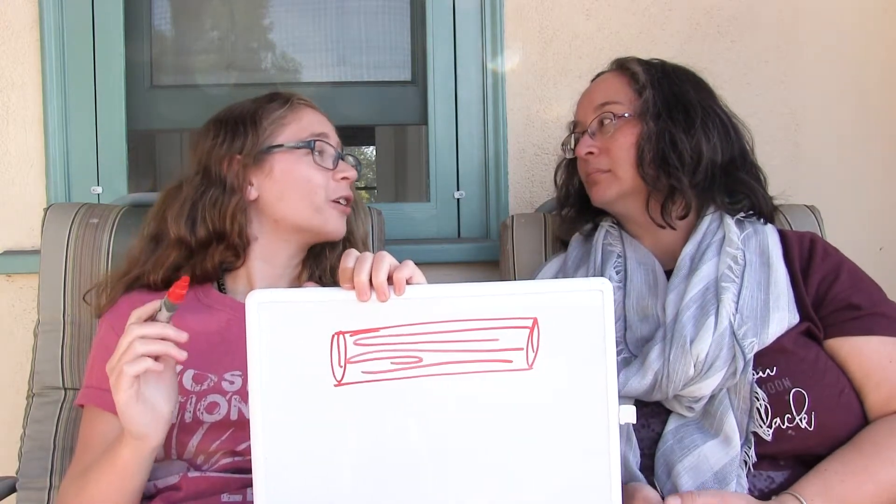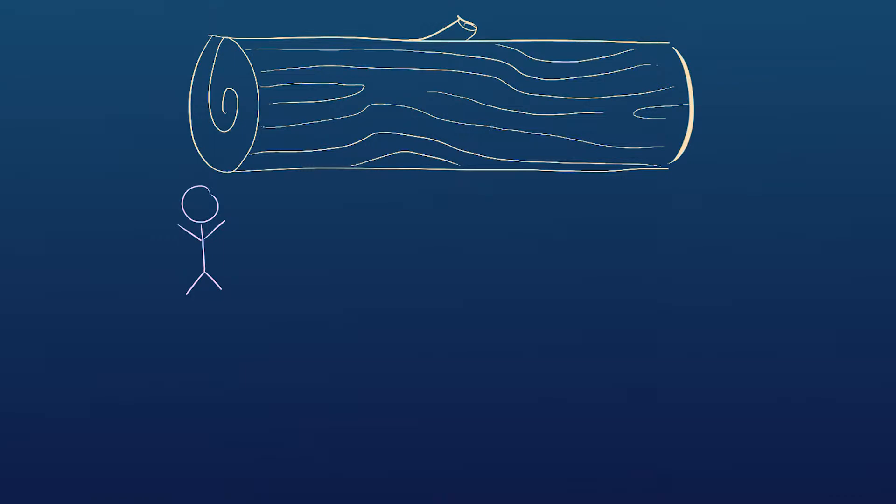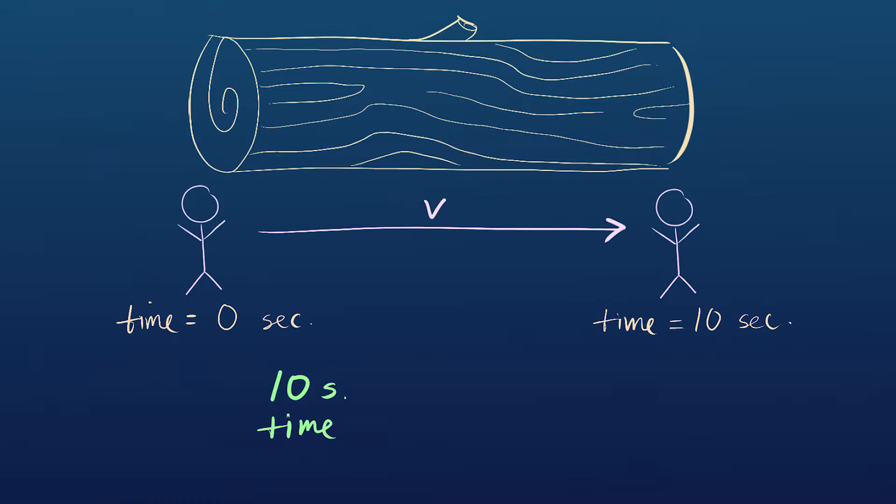The third and final counterintuitive effect of special relativity is about what happens to lengths when they're moving. So say that I want to measure the length of this log. How am I going to do that? I ask you to run at a speed v and I'm going to time how long it takes you to run from the left end of the log to the right end of the log. I'm going to measure the time when you're at the left end of the log and when you're at the right end of the log. And let's say I time you and it takes you 10 seconds. So I know it took you 10 seconds. I know you're traveling at a speed v. So the length of the log is 10 times v.